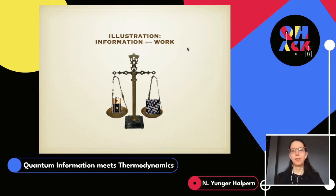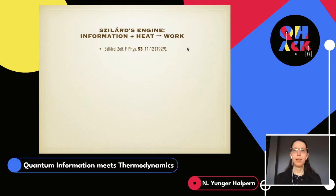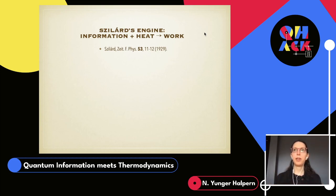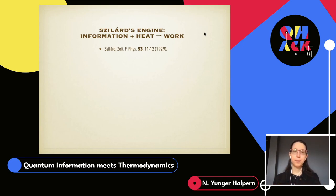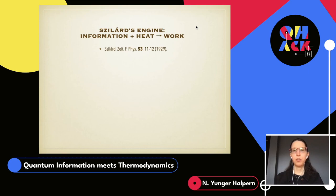Hopefully I've convinced you that thermodynamics and information theory share commonalities. Now I'd like to show that they can help each other out — specifically, that we can use information to transform heat into work. Heat and work are the two types of energy that can be transferred between systems. Heat is the random, uncoordinated energy of particles jiggling about; it isn't directly useful to, say, push a rock up a hill. Work is coordinated and can be directly harnessed.